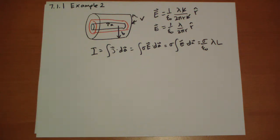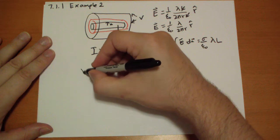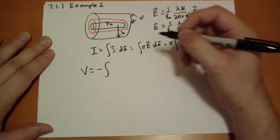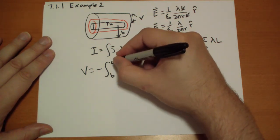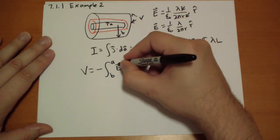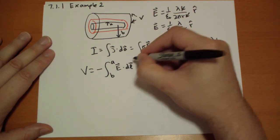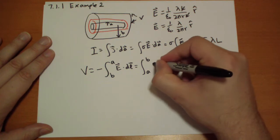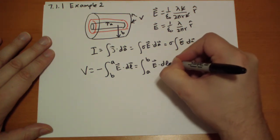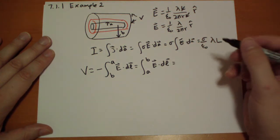Now we're going to calculate the potential difference between the two. So V is equal to negative the integral. Let's think here. So we're going to start at B and walk to A. And we're going to calculate the E vector dot the path that we take. Let's flip the signs.